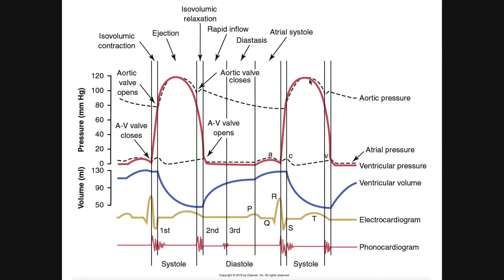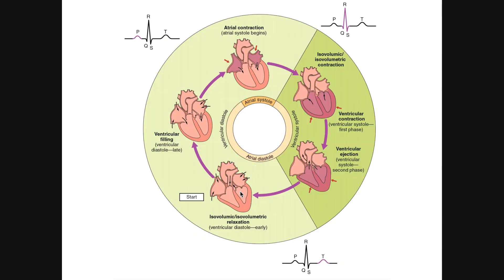As ejection occurs, the ventricle is ejecting blood so volume is decreasing, and the ventricle starts relaxing. Eventually the pressure inside the left ventricle falls beneath the aortic pressure, so the aortic valve closes. The mitral valve is also still closed, so we go through a short phase where both valves are closed and the ventricles are relaxing — not contracting. Since both valves are closed, there's no change in volume in the left ventricle. This is isovolumetric relaxation.